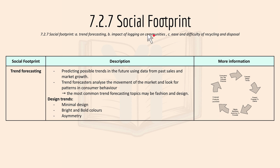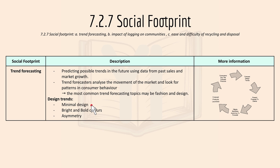7.2.7 covers social footprint. We have trend forecasting, impact of logging, and ease and difficulty of recycling and disposal. Trend forecasting is basically predicting possible trends in the future using data from past sales and market growth. Trend forecasters analyze market movements and look for patterns in consumer behavior. Design trends include minimal design, bright and bold colors, and asymmetry.